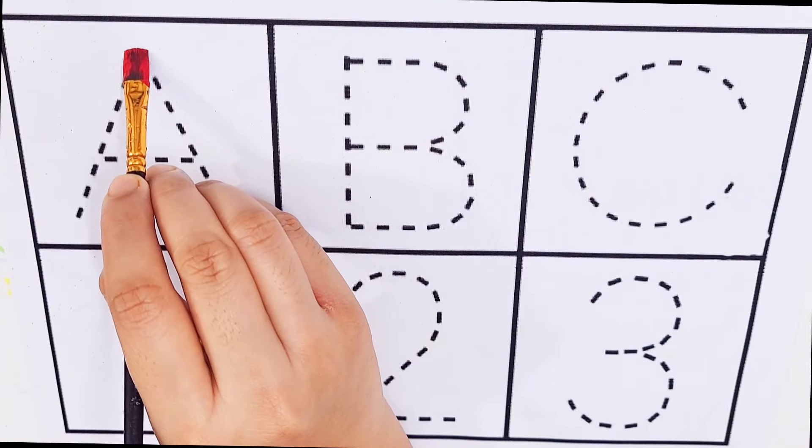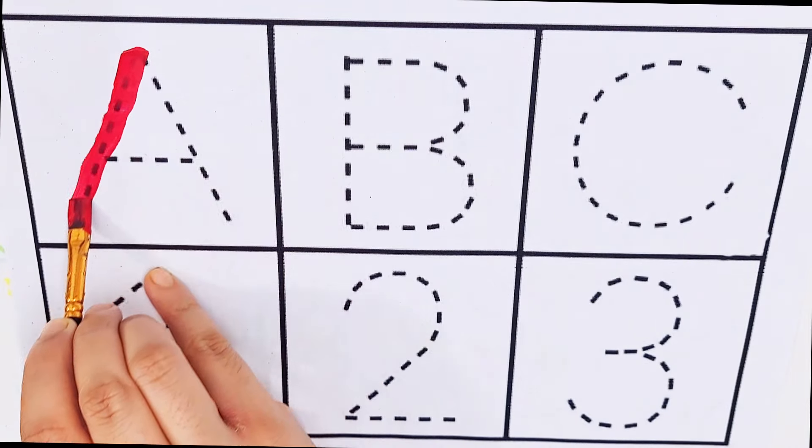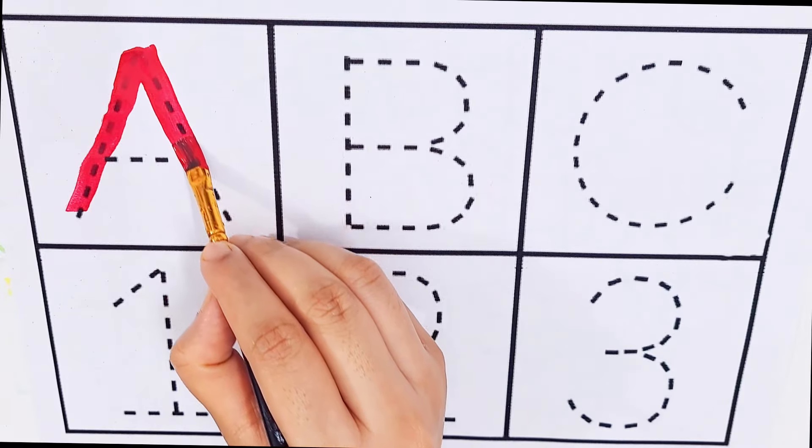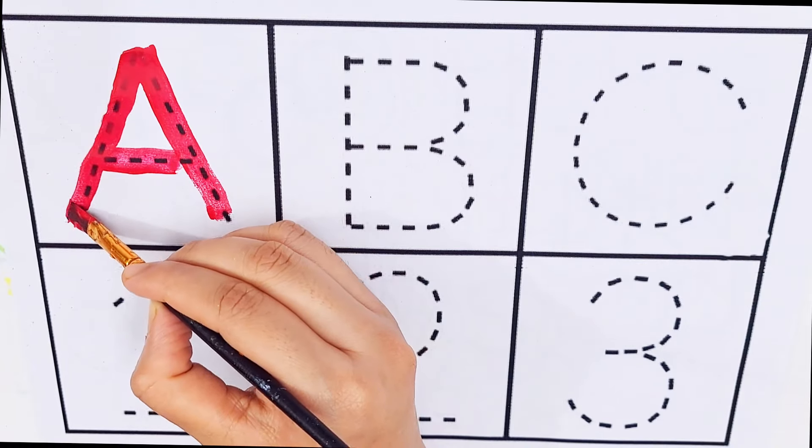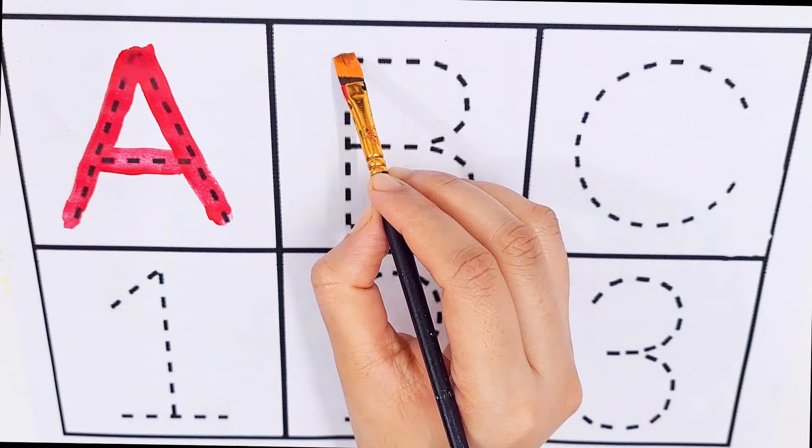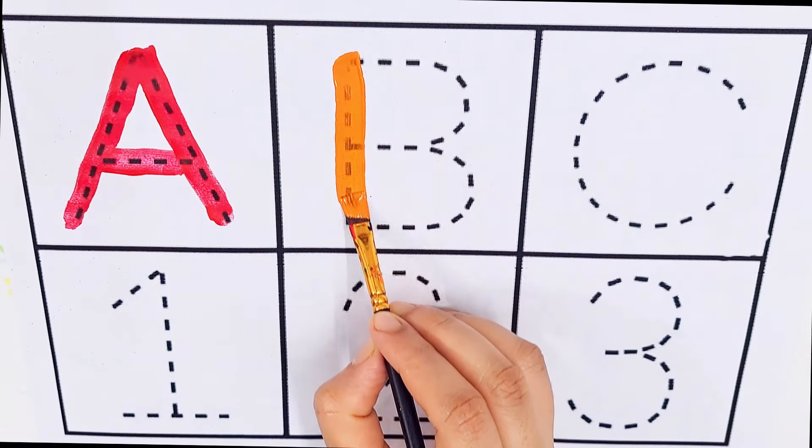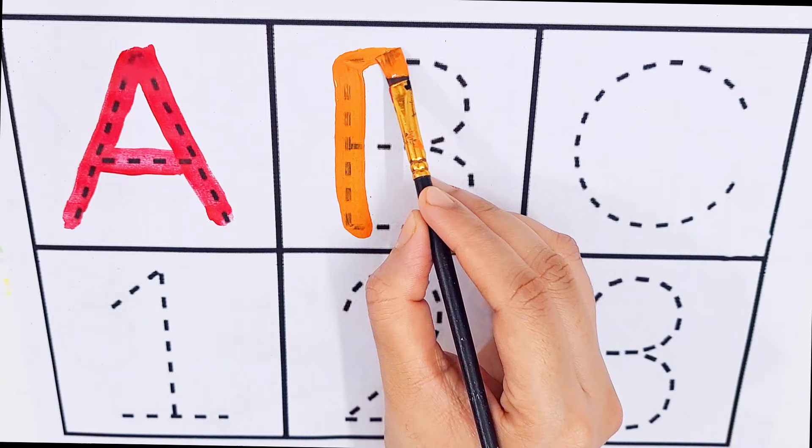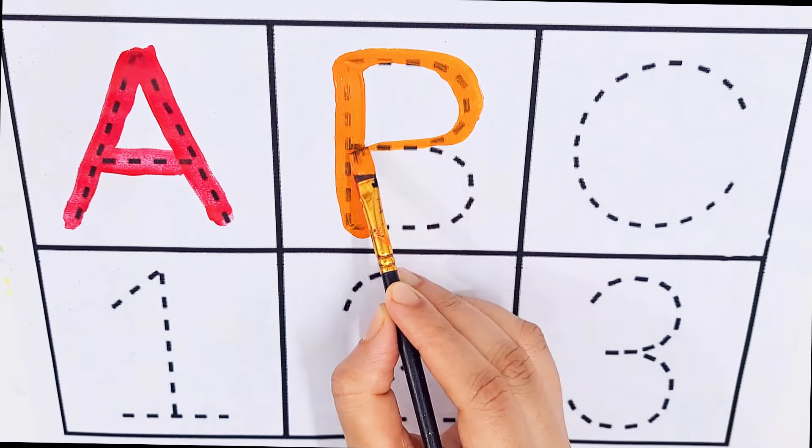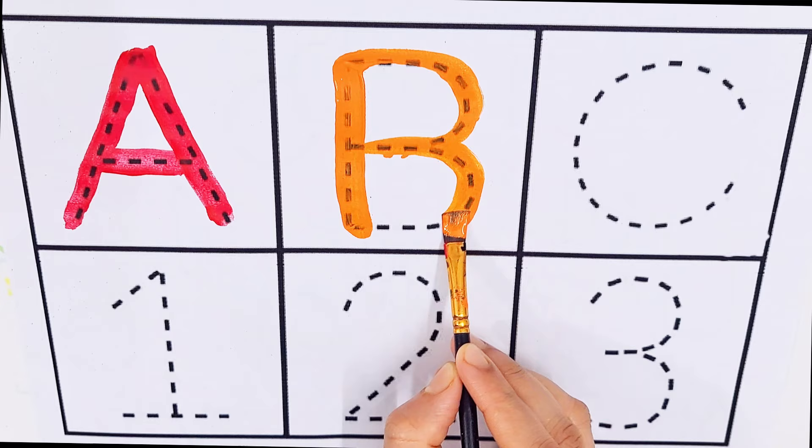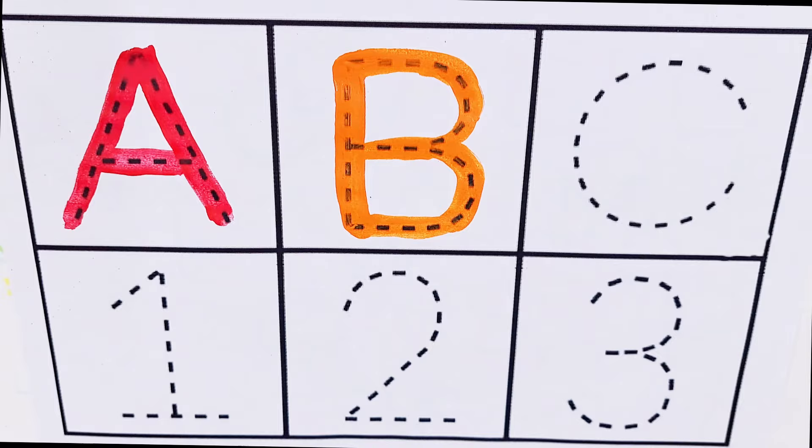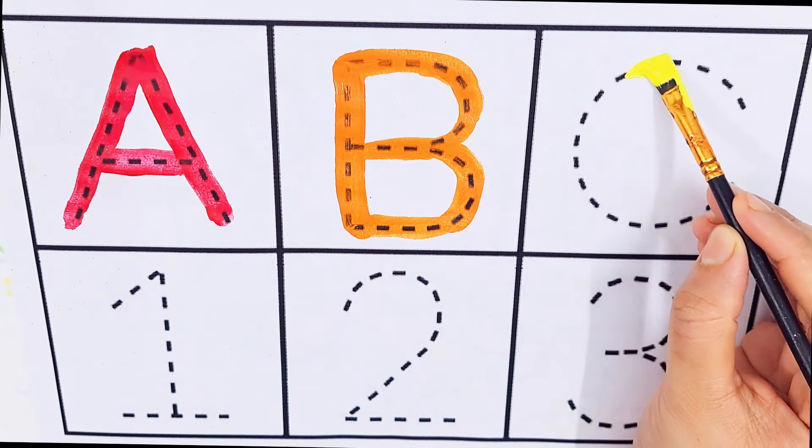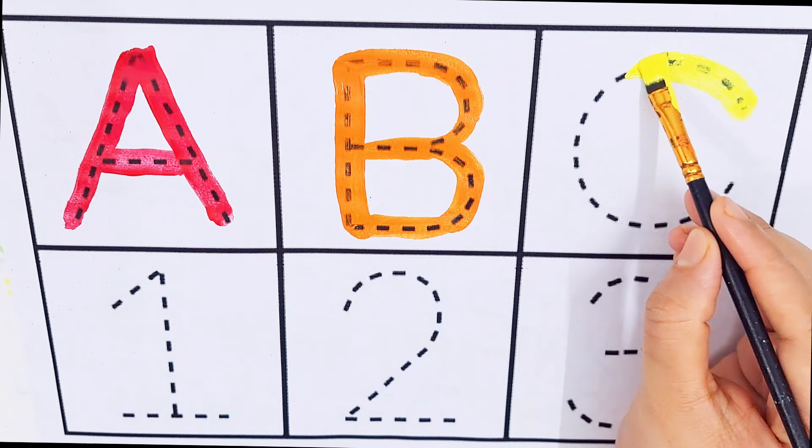Red color. A, A for apple. Orange color. B, B for bus. Yellow color. C, C for candy.